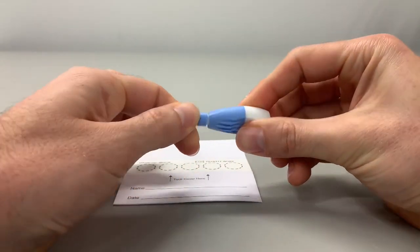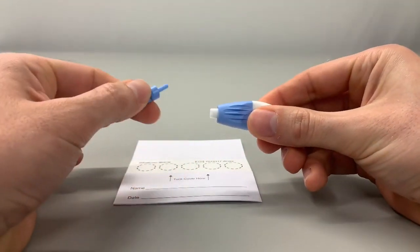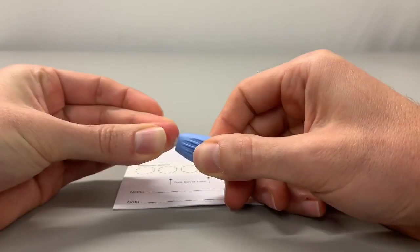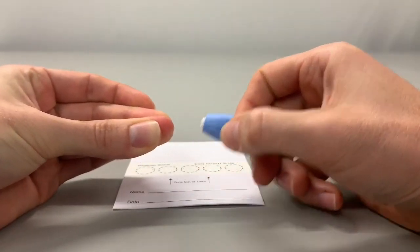Prepare the lancet by twisting off the cap and removing it. Take the lancet to the tip of the finger that you cleaned with the alcohol pad and press firmly until you hear a click.